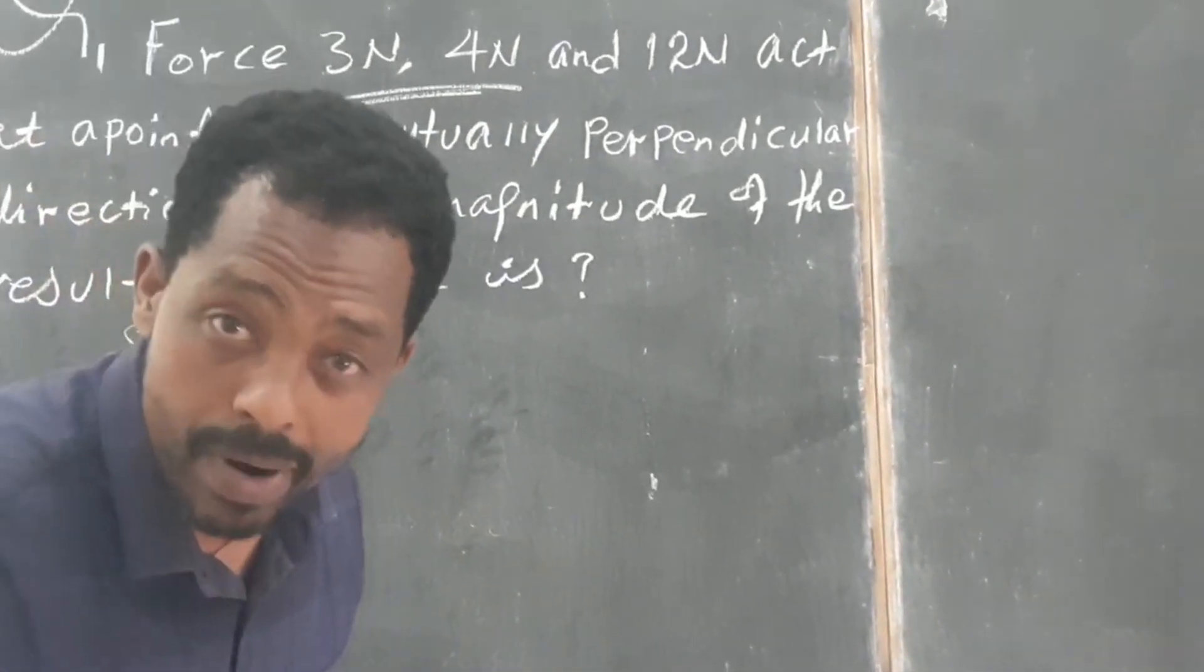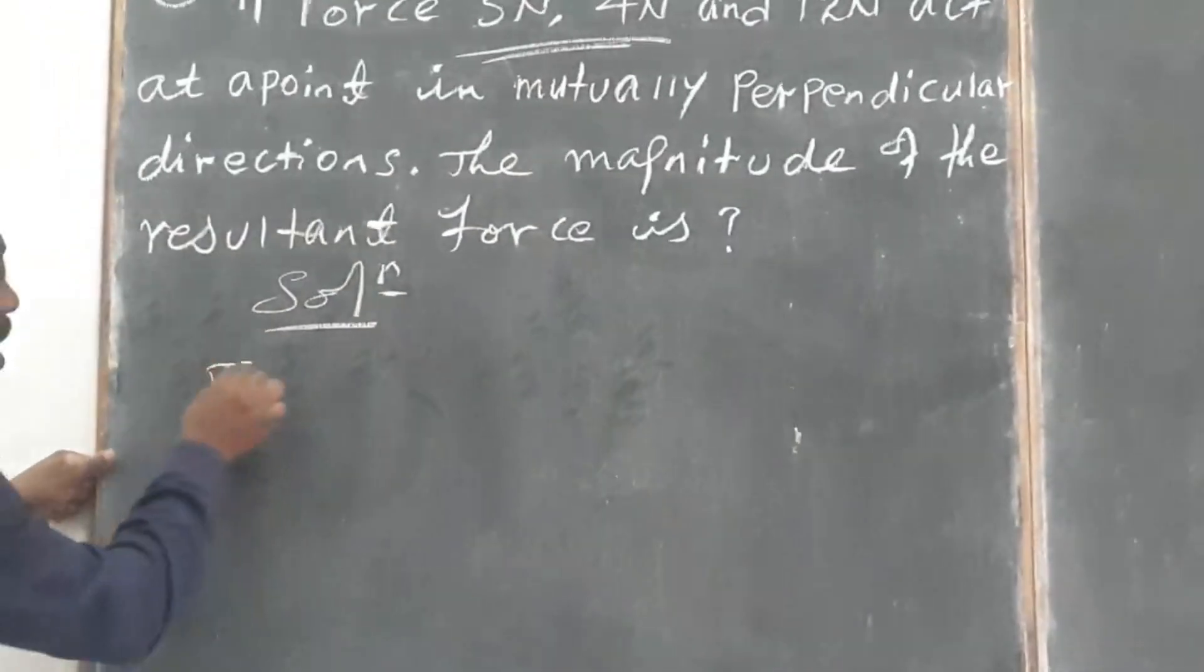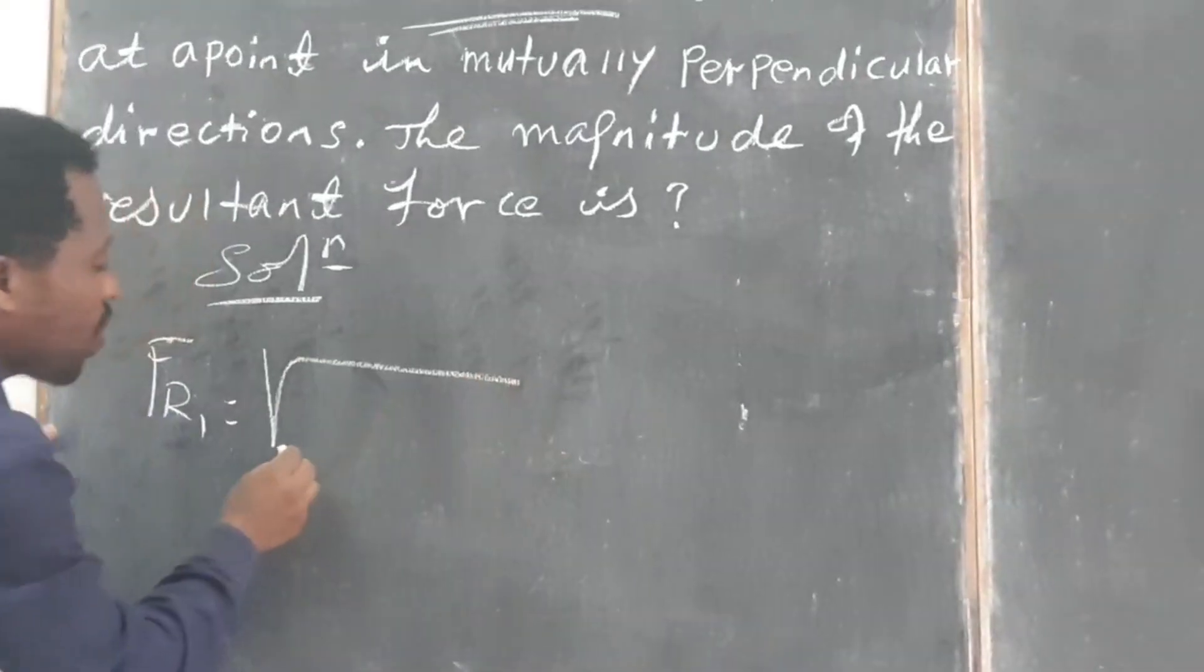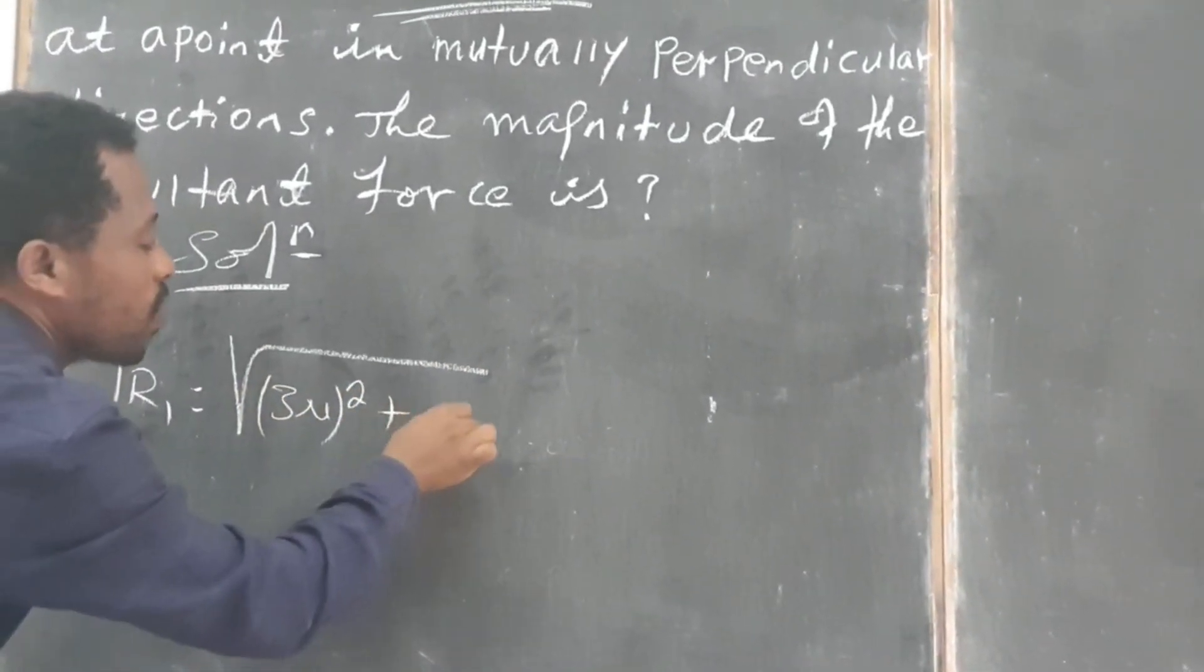And then they are mutually perpendicular. If so, if we say F1 is equal to simply square root of 3 Newton squared plus square of 4 Newton.